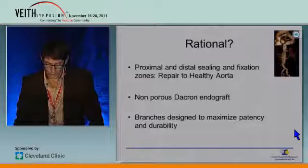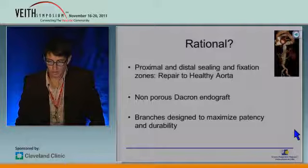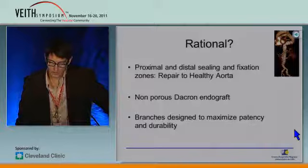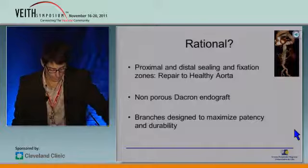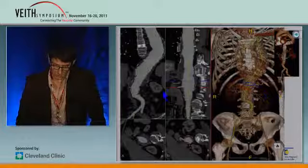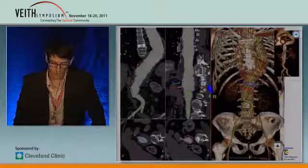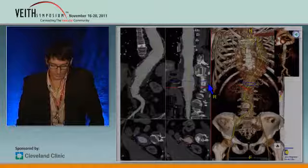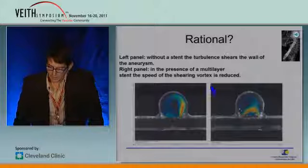So what's the rationale for using a branched endograft? You're going from proximal healthy aorta to distal healthy aorta — proximal to the aneurysm, distal to the aneurysm — implanting a non-porous endograft, and any visceral vessel in this area will be perfused by a branch of the endograft. We usually use 3D pre-reconstruction to depict the proximal and distal landing zone and to size our endograft. We've seen this morning that we have off-the-shelf options now, and we still have access to custom-made devices.